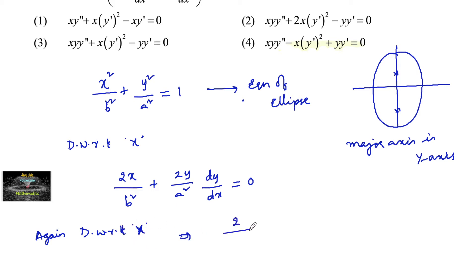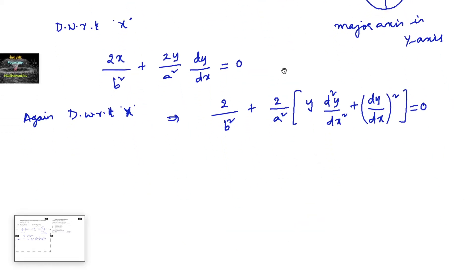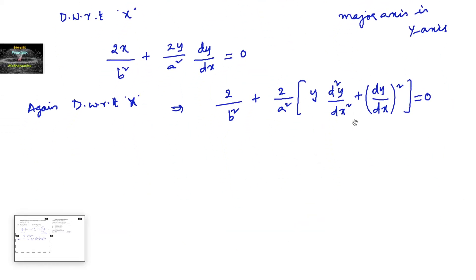We get 2/b² + (2/a²)[y · d²y/dx² + (dy/dx)²] = 0. Let's write dy/dx as y′ and d²y/dx² as y″. We can also take out 2 as a common factor.